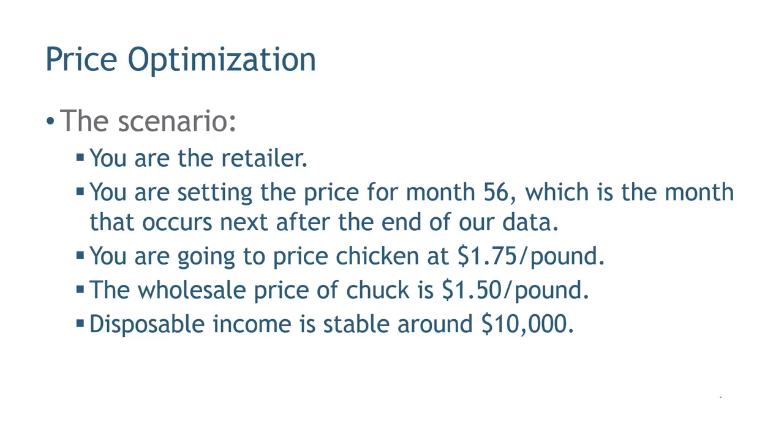So we're going to be in month 56, and you're going to price chicken at $1.75 a pound. You're the retailer. You have the ability to do that. And the wholesale price of Chuck, that means the person selling it to you, that's the wholesale price, is $1.50. And we're going to be trying to decide, based on that information, what should the retail price of Chuck be? We also know that the individuals in the sample have a disposable income around $10,000, and that's stable.